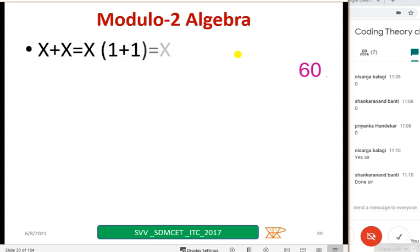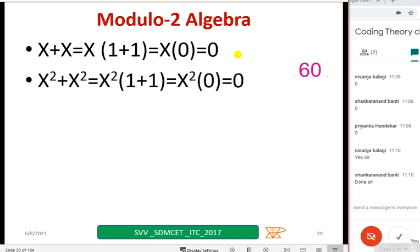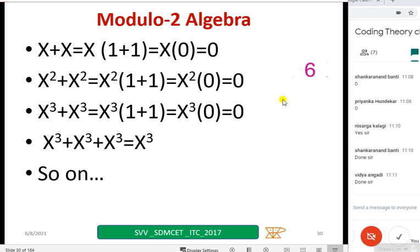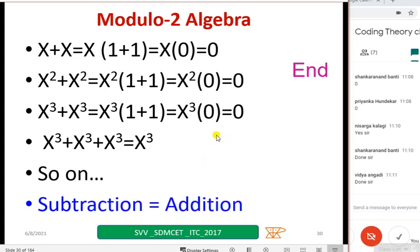Modulo 2 algebra. All of you know x plus x equal to 0. Just now all of you told, no need of any explanation. X square plus x square equal to 0. X cube plus x cube equal to 0. And x cube plus x cube plus x cube equal to x cube. So on. This is known to you people. Take a few seconds and copy down.